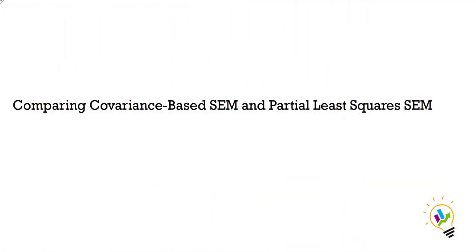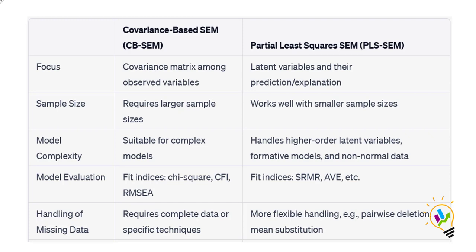Hello, welcome to Easy Statistics. In this video I'm going to discuss the comparison between covariance-based SEM and partial least square SEM. I'll take the top five features and see the difference between them. Covariance-based SEM uses AMOS software, while Smart PLS is the software used to handle partial least square SEM.